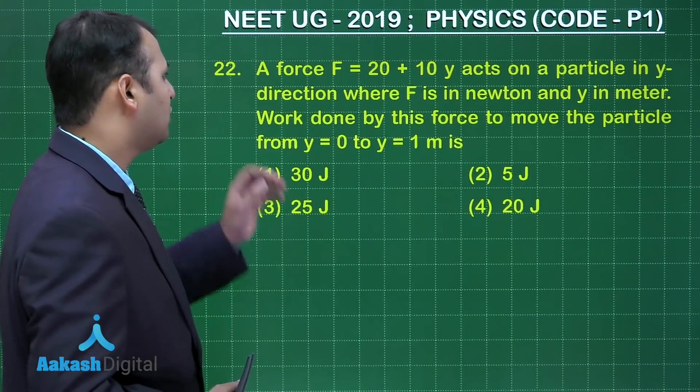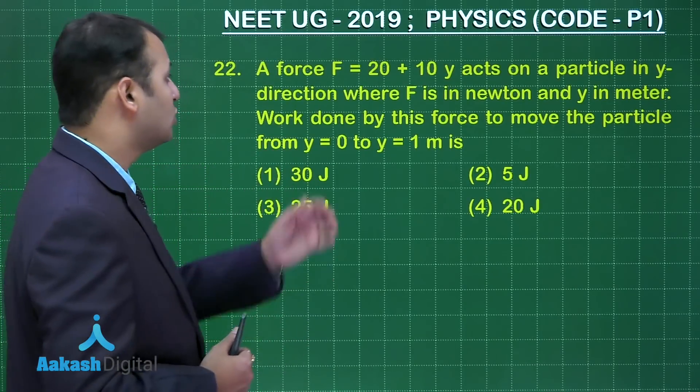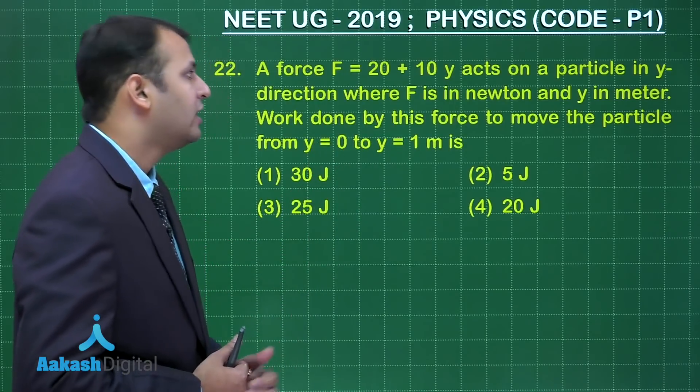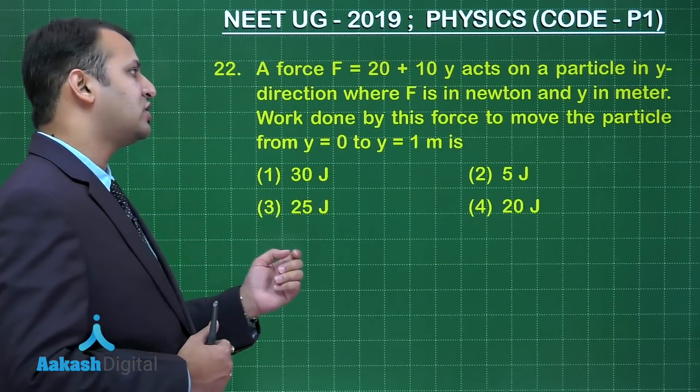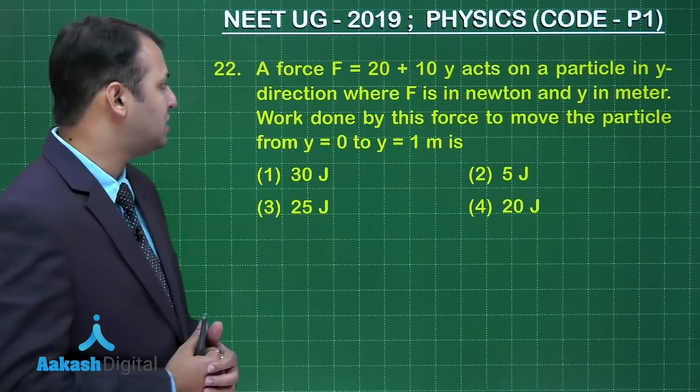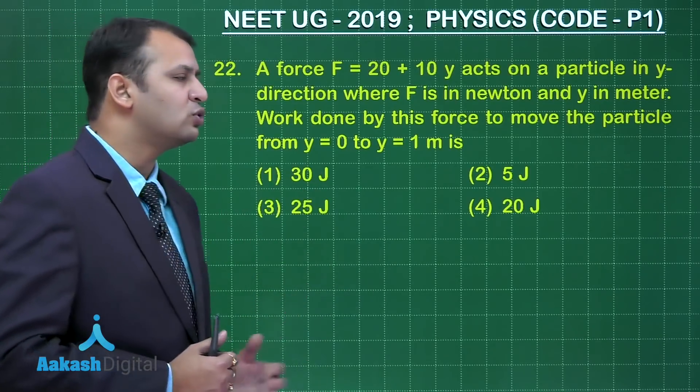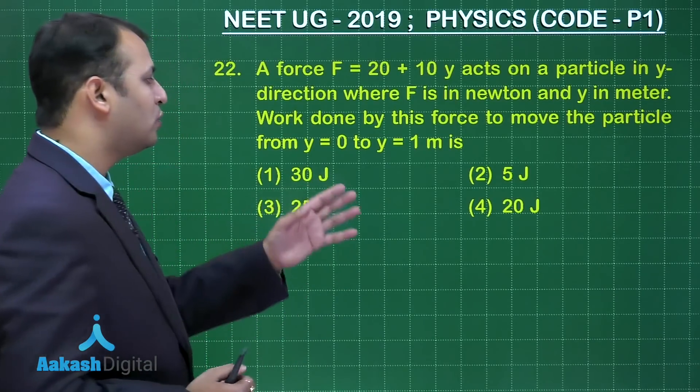As per the question, a force which is variable, that is equals to 20 plus 10y, acts on a particle in y direction where F is in Newton and y is in meters. Work done by this force to move the particle from 0 to 1 meter is: